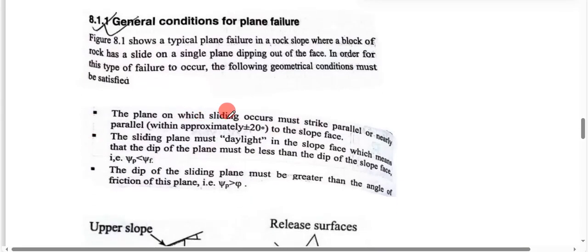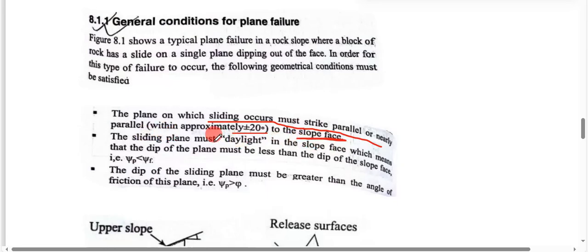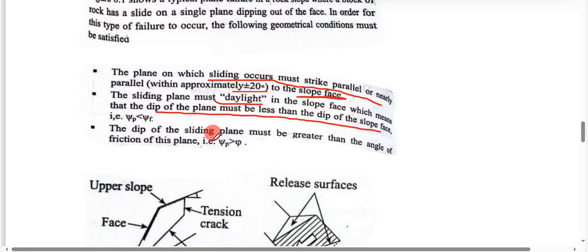For plane failure, the plane on which sliding occurs must strike parallel or nearly parallel to the slope face. The sliding plane must daylight in the slope face, which means that the dip of the plane must be less than the dip of the slope. Also, the dip of the sliding plane must be greater than the angle of friction.